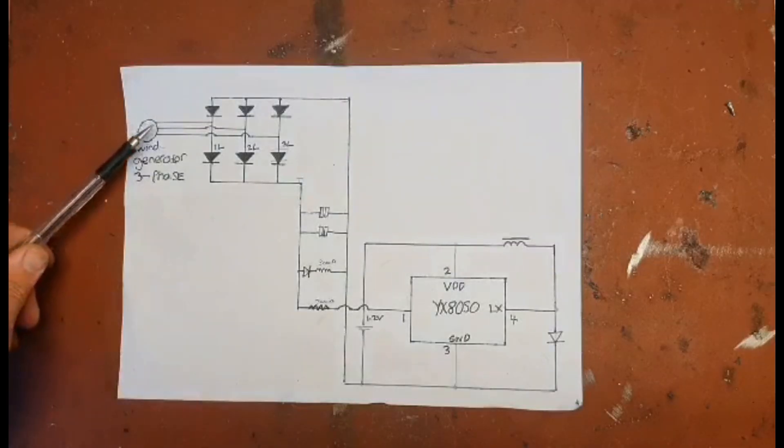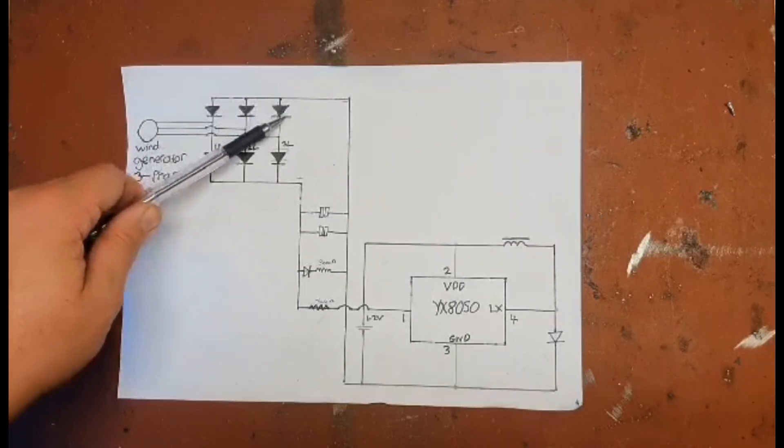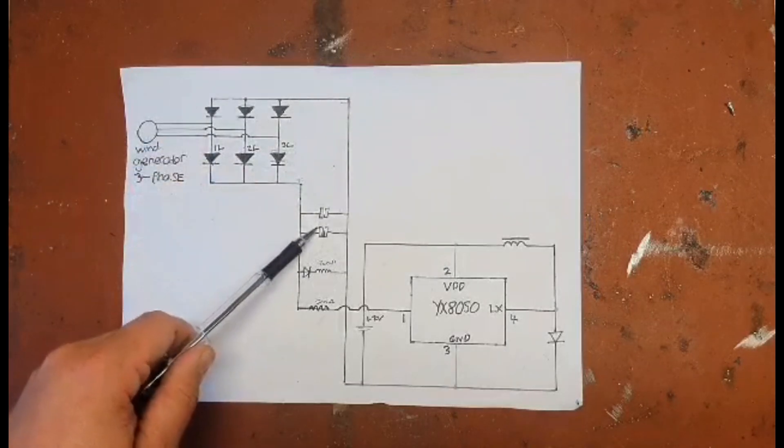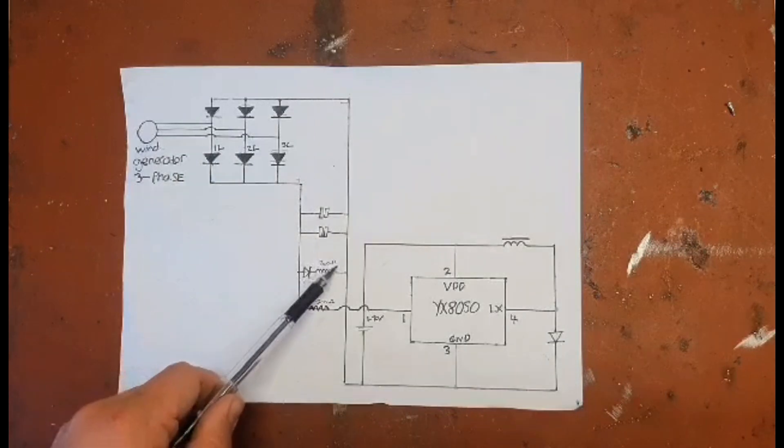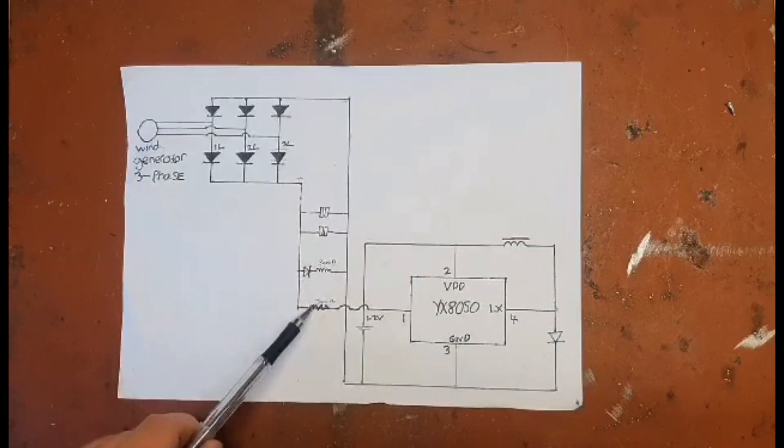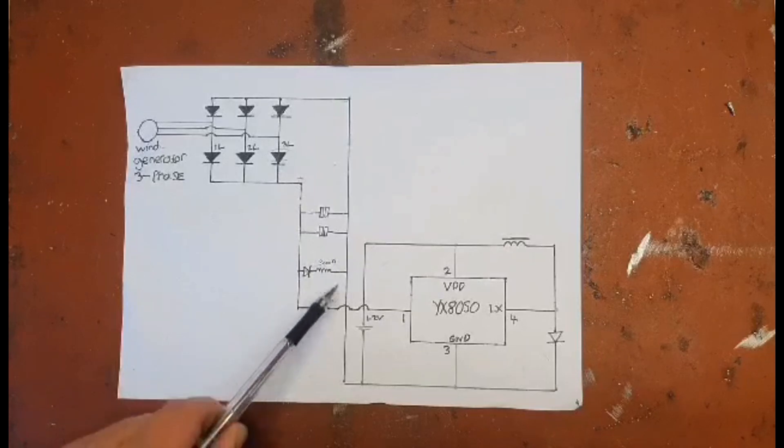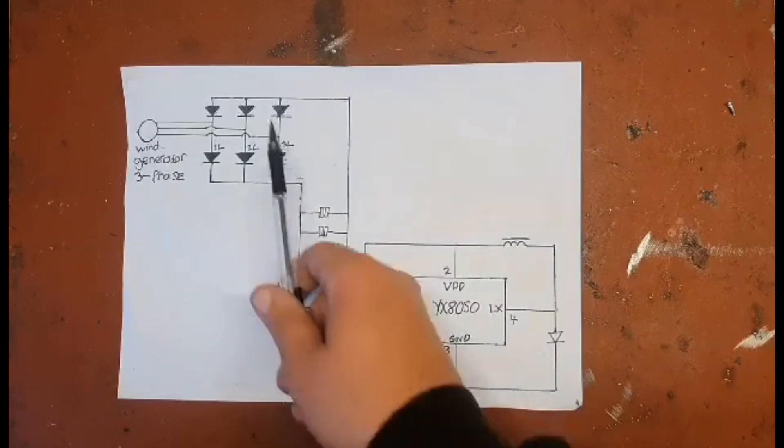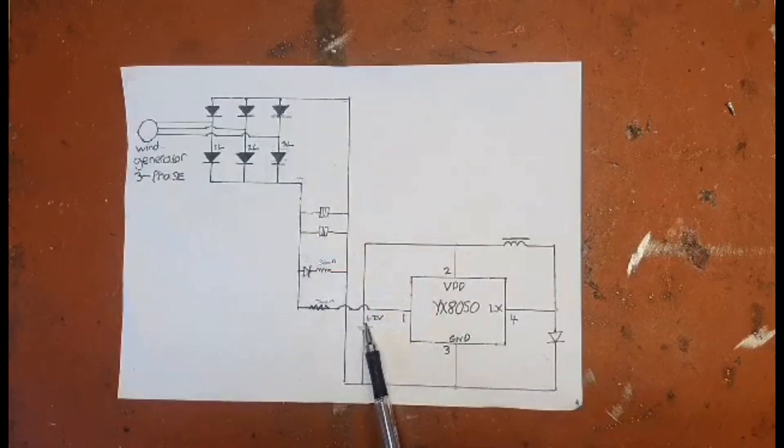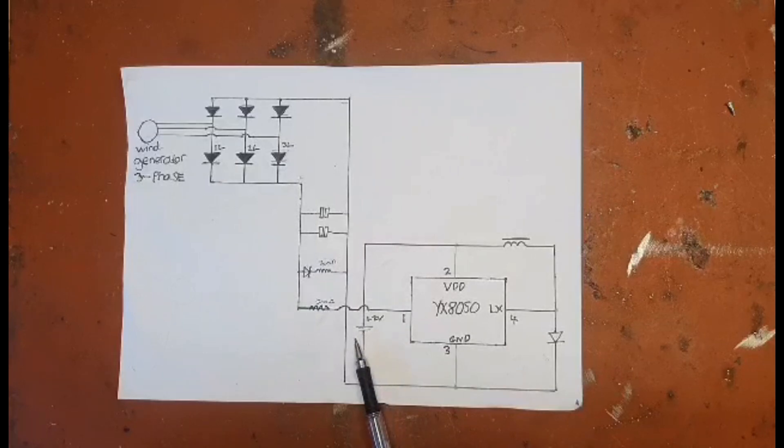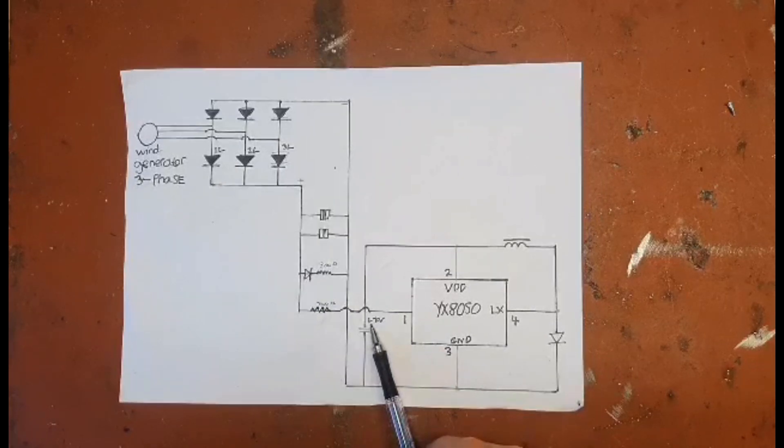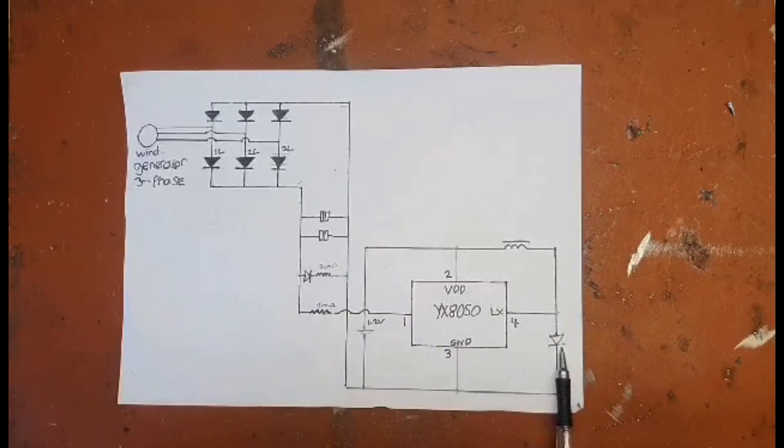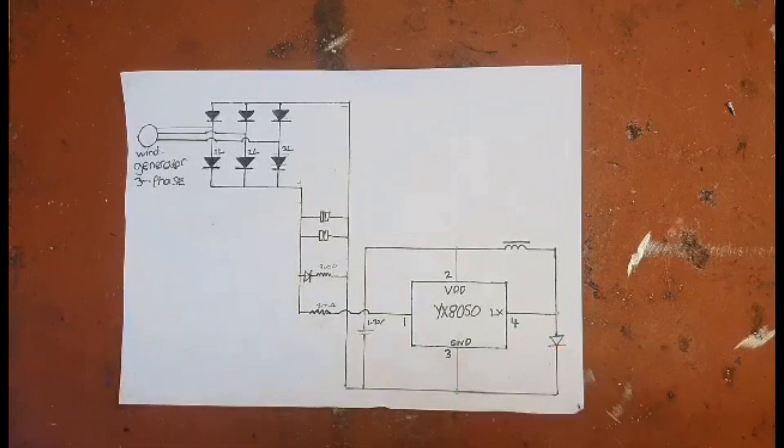Here's the diagram. The wind generation goes into the three-phase bridge rectifier, positive and negative into the capacitors, then into the 300 ohm and LED diode, and then another 300 ohm into the controller. That then charges this 1.2 volt battery when there's power being generated. Once there's no power generated, the power from that battery will go to this LED here.